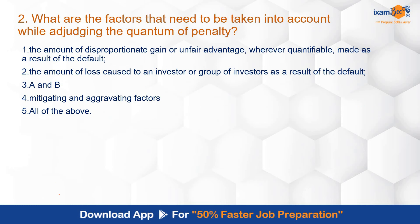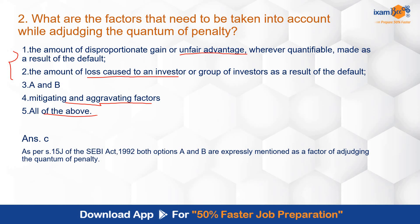Question 2: What are the factors that need to be taken into account while adjudging the quantum of penalty? Options: amount of disproportionate gain or unfair advantage; whether quantifiable loss was made as a result of default; amount of loss caused to an investor or group of investors as a result of default; both A and B; and mitigating and aggravating factors. The correct answer is C — both A and B. This is as per section 15J of the SEBI Act. Both options A and B are expressly mentioned as factors for adjudging the quantum of penalty.